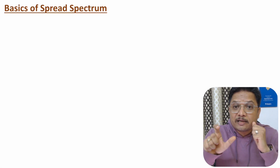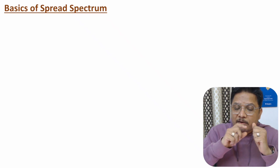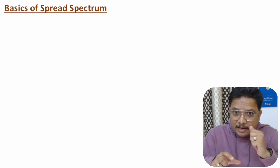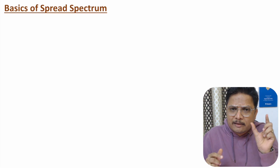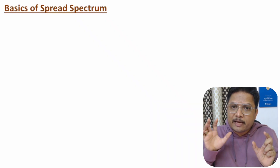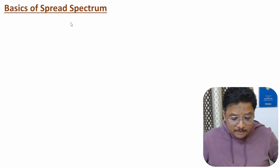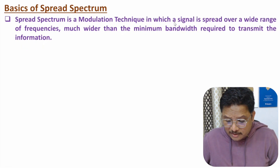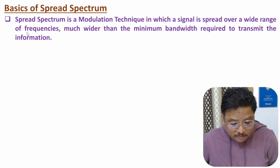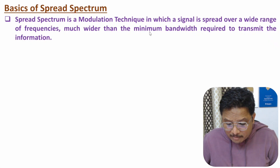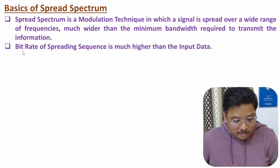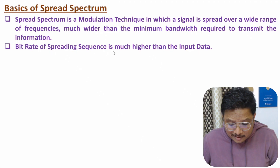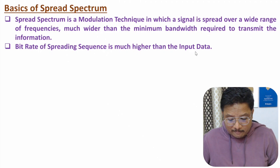When you have a voice call using CDMA technology, the CDMA channel will have bandwidth in terms of megahertz. So with spread spectrum and CDMA we broaden the bandwidth. Spread spectrum is a modulation technique in which a signal is spread over a wide range of frequencies — much wider than the minimum bandwidth required to transmit the information. For digital data, using a spreading sequence we achieve a higher data rate compared to the input data.